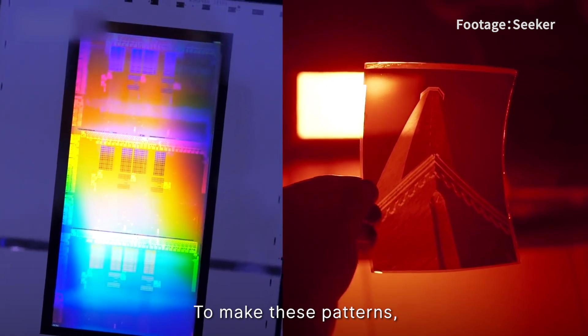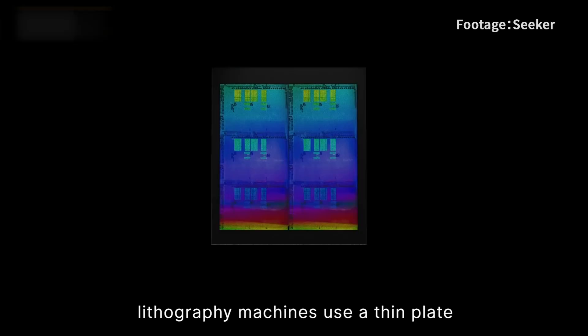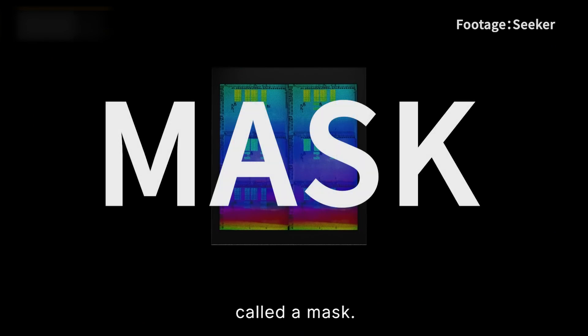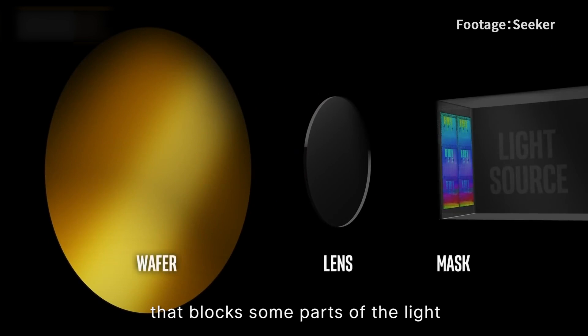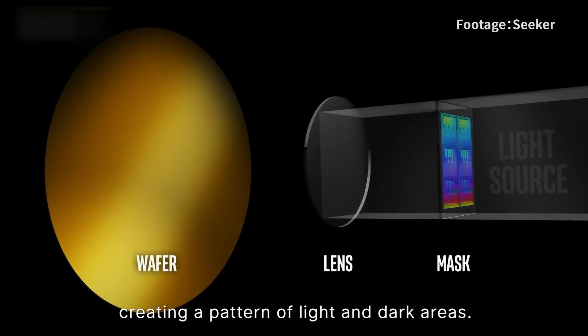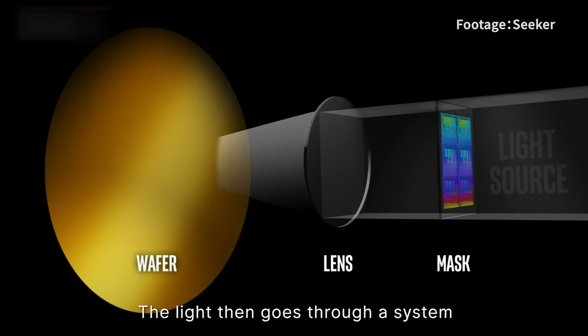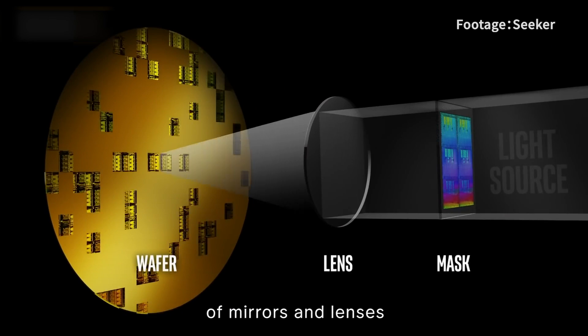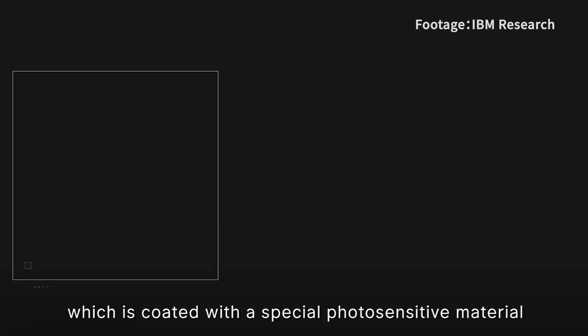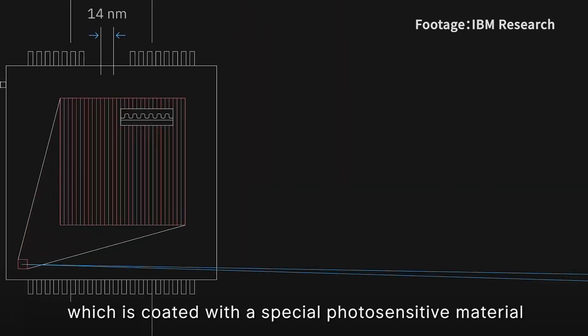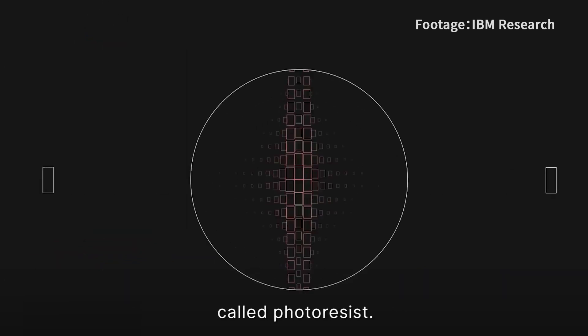To make these patterns, lithography machines use a thin plate with a circuit diagram on it called a mask. The mask is like a stencil that blocks some parts of the light and lets other parts through, creating a pattern of light and dark areas. The light then goes through a system of mirrors and lenses that shrinks and focuses the pattern onto the silicon, which is coated with a special photosensitive material called photoresist.